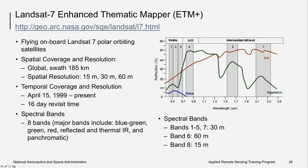The Landsat 7 Enhanced Thematic Mapper launched in 1999 and has remained operational since, with a 16-day revisit rate. Spectral bands include blue-green, green, red, panchromatic, and reflected and thermal IR. Note that the reflectance of water is relatively lower than the reflectance of land — recall that water is a dark target. It also absorbs light strongly in the near-infrared and beyond, so the number of useful bands for aquatic applications is limited to the visible range.